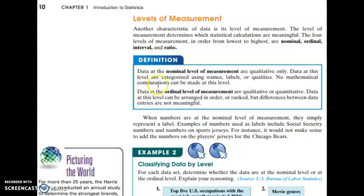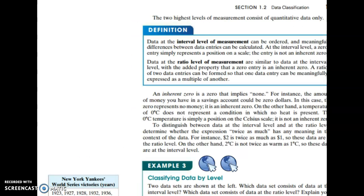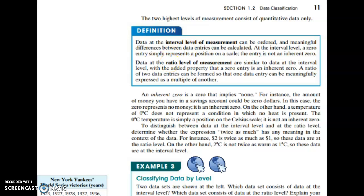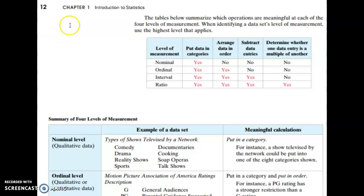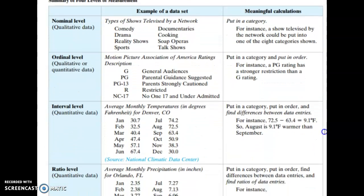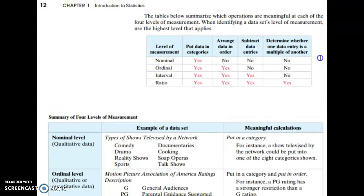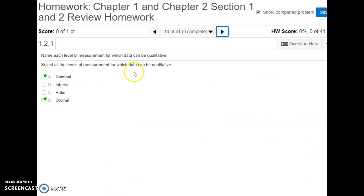There are different levels of data. The first two levels are called nominal and ordinal, and then the next two are interval and ratio. With each additional level of measurement, there's a chart near the end of 1.2 that shows how you get additional information — the ratio level has a yes to all categories. If data is qualitative, it has to be at either the nominal or ordinal level. If you're at the interval or ratio level, then your data has to be quantitative — numbers, numerical.